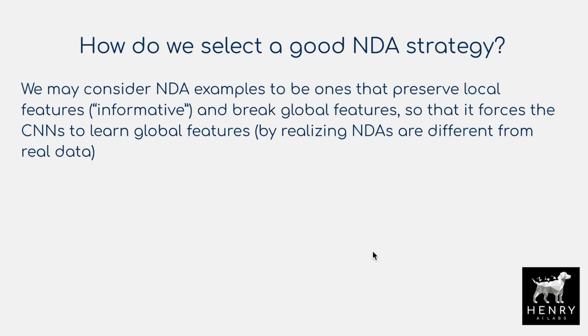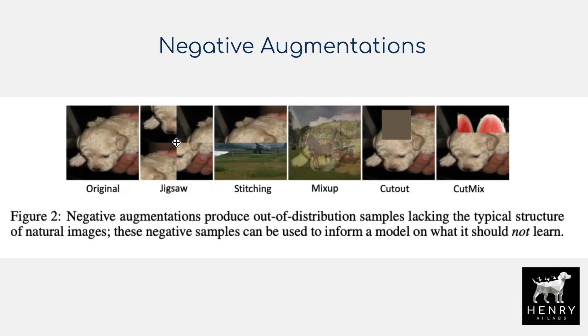The technical consideration for selecting a good NDA strategy is: we may consider NDA examples to be ones that preserve local features but break global features. This forces CNNs to learn global features by recognizing that NDAs differ from real data. The jigsaw augmentation is the key example here — it corrupts the global structure by rearranging patches. The model still sees all the same local features like the dog's nose and eye, but the global structure is changed, so passing it in as a negative augmentation teaches the model that corrupted global structure is out of distribution.